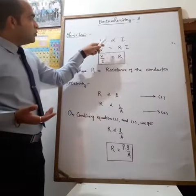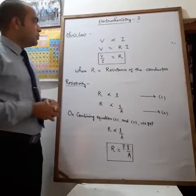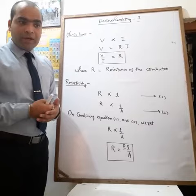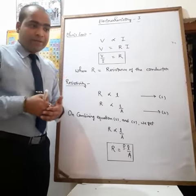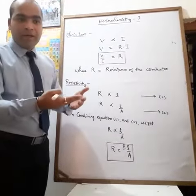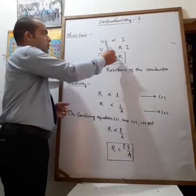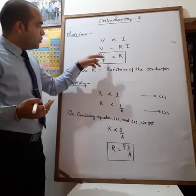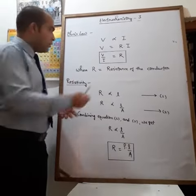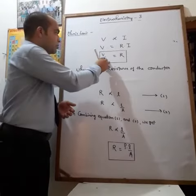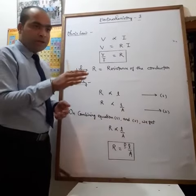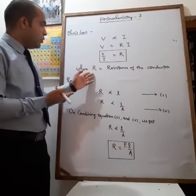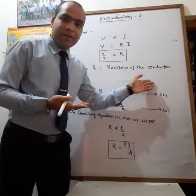Now we will remove the sign of proportionality and introduce a constant that is known as R. Here R is the resistance of that particular conductor, which is a tendency that resists or opposes the flow of electric current through it. So the next term will be V upon I is equal to R. From this formula we can conclude that the ratio of the potential difference and the current flowing in a conductor is constant at a constant temperature, and that is equal to R. So R is the resistance of the conductor.